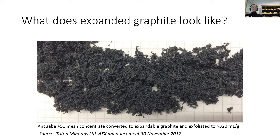The second trending area is expandable graphite: chemicals are incorporated into the graphite, and when you heat it the graphite expands. That vermicular-looking material can then be rolled into a graphite foil, which may find applications in things like laptop computers, where a sheet of that material is used to dissipate heat.